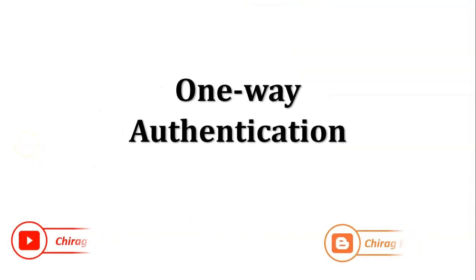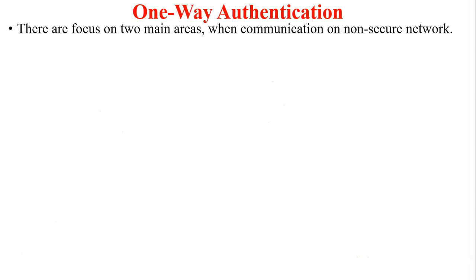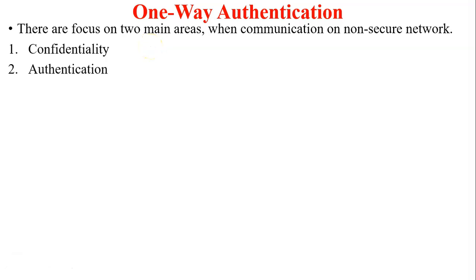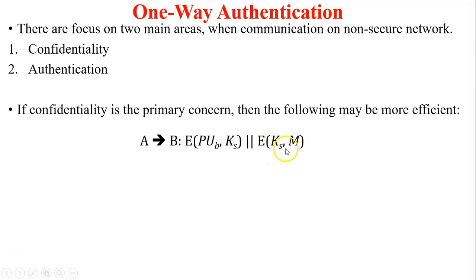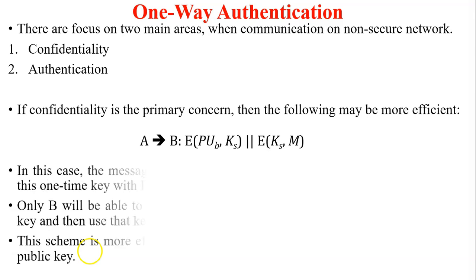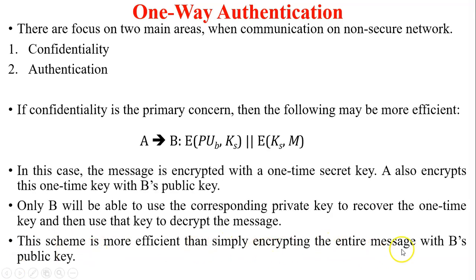The next method is one-way authentication. Whenever you send a message over a non-secure network, there are two main concerns: confidentiality and authentication. If confidentiality is the primary concern, the following may be more efficient: user A sends a request to user B where the message is encrypted using the session key, and the session key is encrypted using the public key of user B. User B decrypts to get the session key and then decrypts the message. This scheme is more efficient than simply encrypting the entire message with the public key of user B.